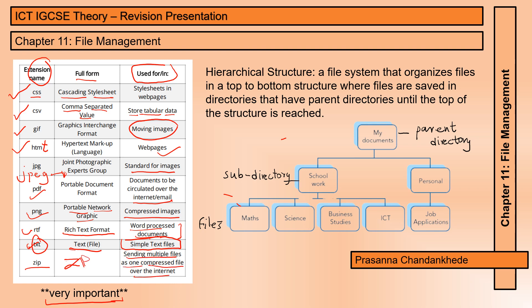Next we have hierarchical structure — it's basically a file system that organizes files in a top-to-bottom structure, where files are saved in directories that have parent directories, going up until the top of the structure is reached.